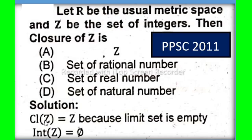Solution: The closure of Z is equal to Z, meaning the set of integers, because the limit set is empty. So option A is correct. The interior of Z is equal to the empty set.